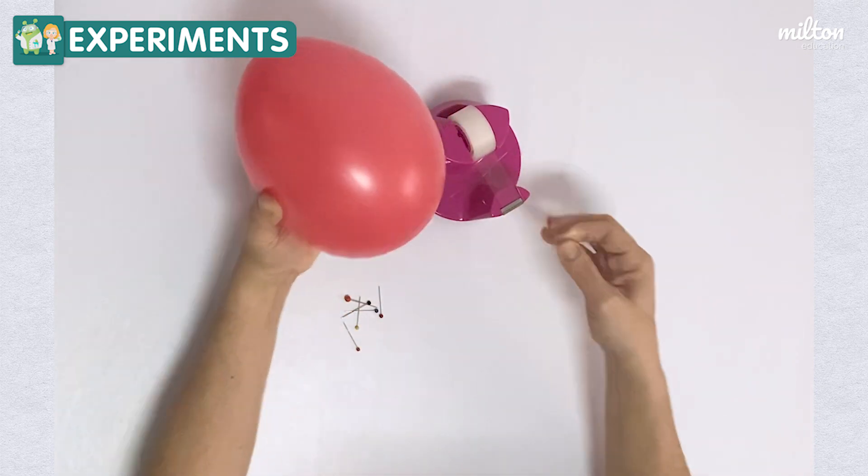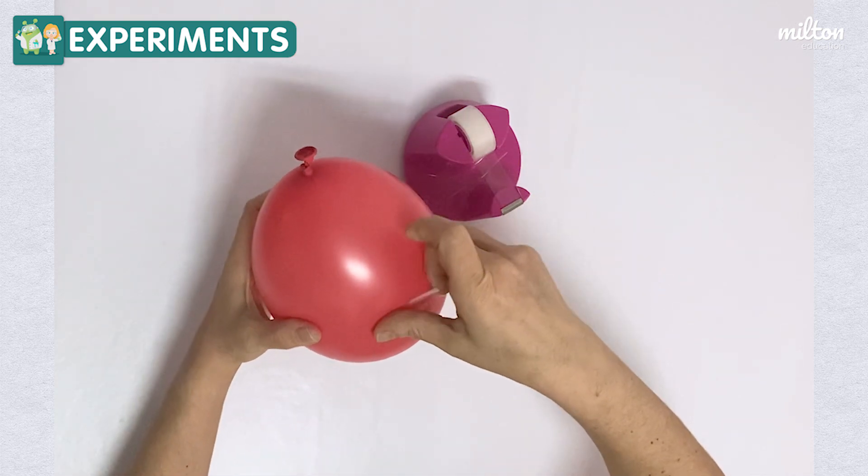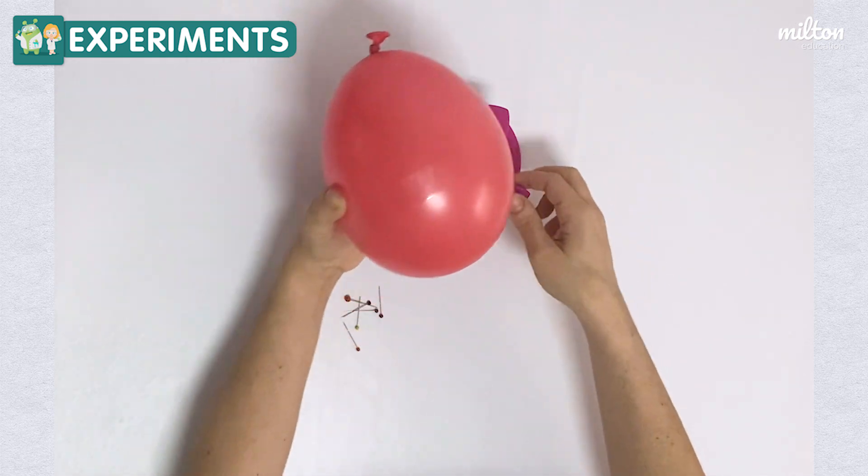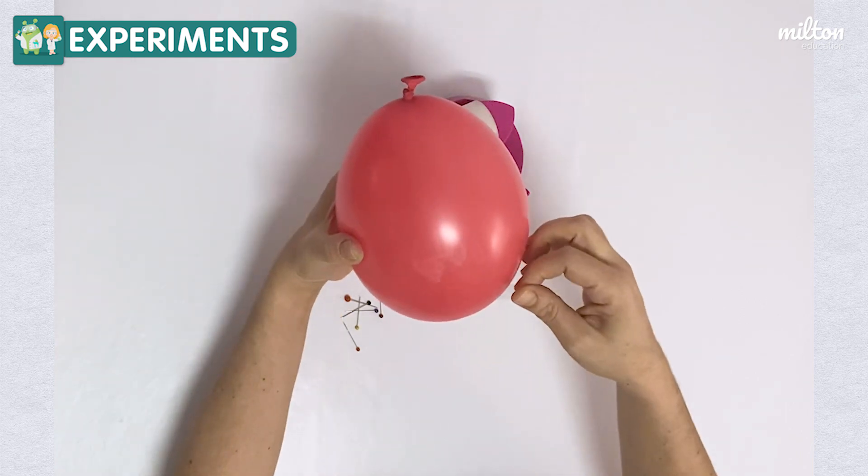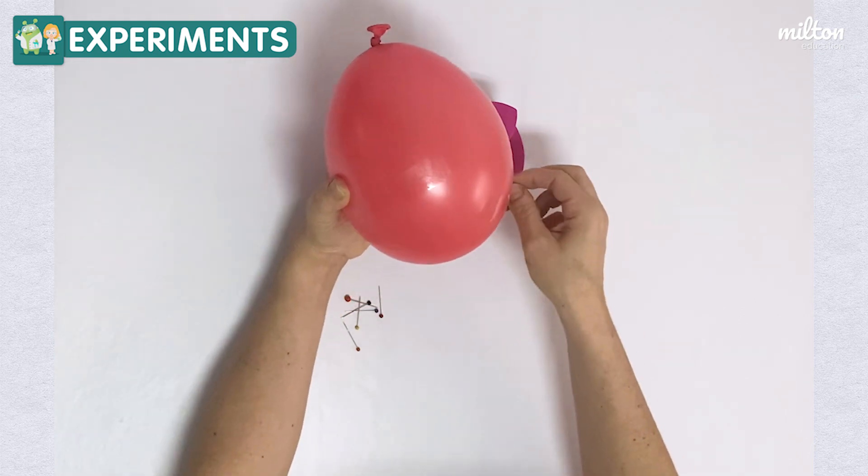Then, take small pieces of sellotape, about two centimeters long, and stick them onto the surface of the balloon.